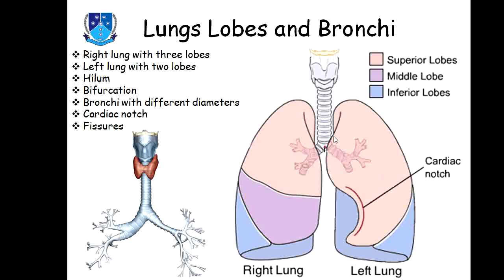The right bronchus and left bronchus go into the hilum of the lung. The right lung is larger in size than the left lung. The right lung consists of three lobes: superior, middle, and inferior lobe, while the left lung consists of only superior and inferior lobe. The lobes are divided by fissures — the right lung has both a horizontal fissure and an oblique fissure, while the left lung has only an oblique fissure.